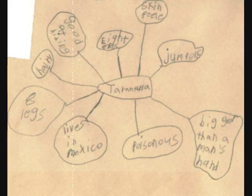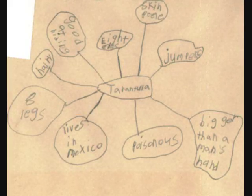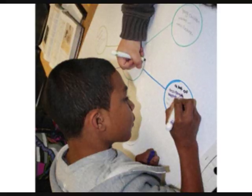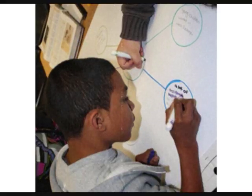Teachers should model first how to complete the semantic map. Students learn from their prior knowledge and from their peers, so it can be beneficial to work with groups or in partners.